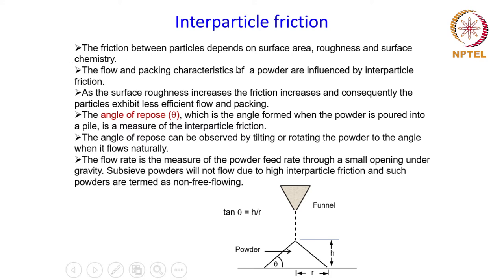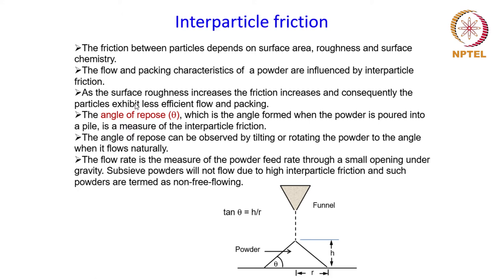This friction between the particles will depend on the surface characteristics — for example, the surface area, surface roughness, and surface chemistry. These are the surface characteristics which affect interparticle friction. The flow and packing characteristics of the powder are influenced by the interparticle friction. As surface roughness increases, friction increases, and consequently the particles exhibit less efficient flow and packing. If the particles have high interparticle friction, it might become difficult to pack them and the compaction process may be difficult.